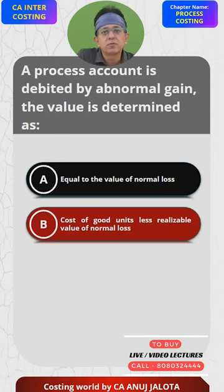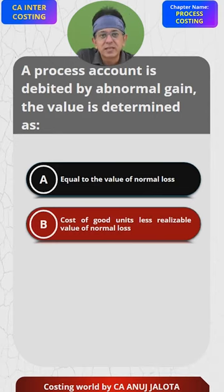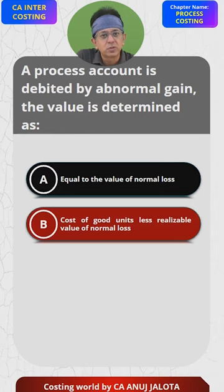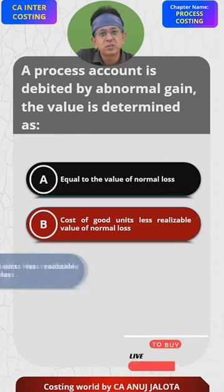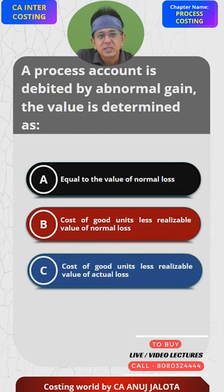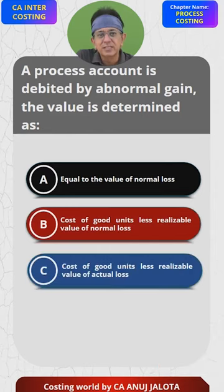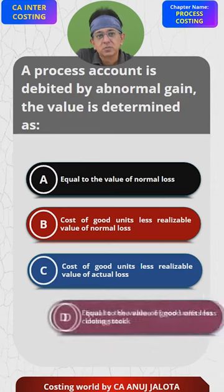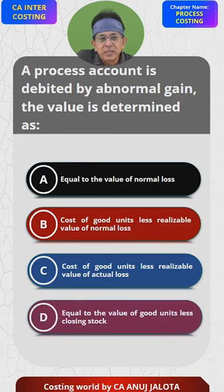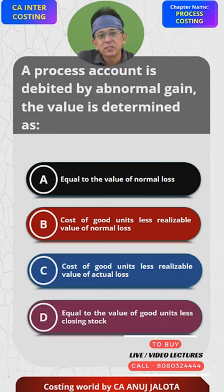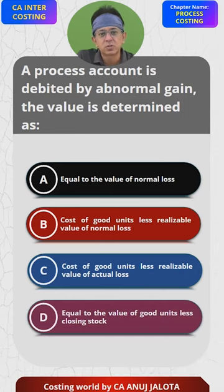Option B: cost of good units less realizable value of normal loss — I will come back to this. Option C: cost of good units less realizable value of actual loss. Option D: equal to the value of good units less closing stock.